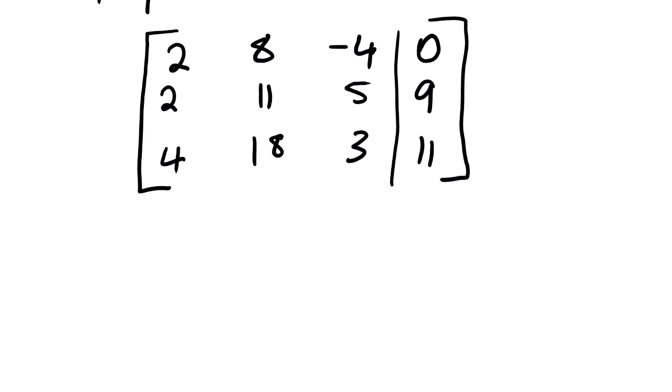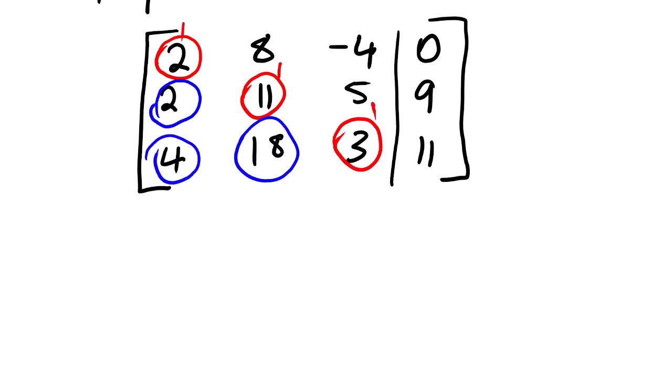This method is simple. All we need to do is change the leading elements to be 1, and then the rest of the elements below must be 0. That is the idea behind Gaussian elimination method. We are going to change this matrix to be in row echelon form such that the leading diagonal elements are 1.